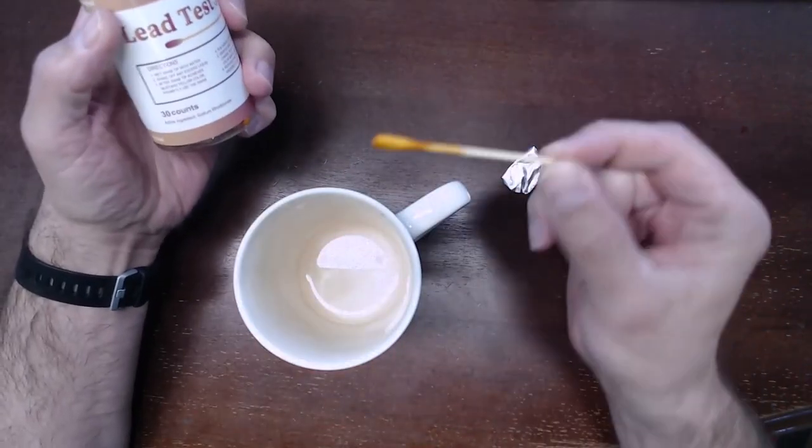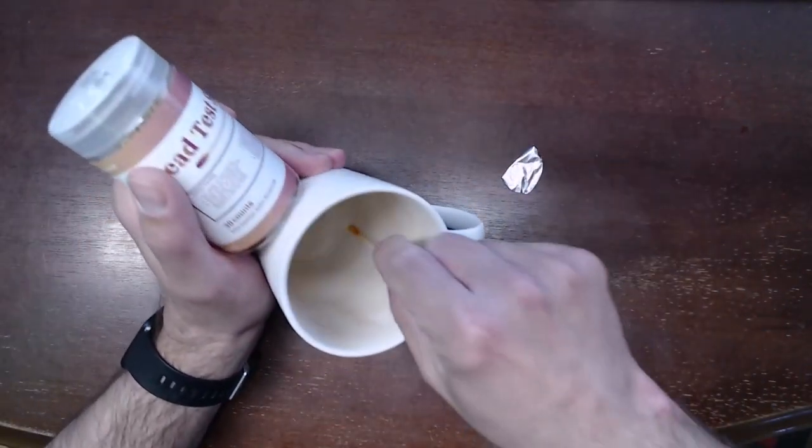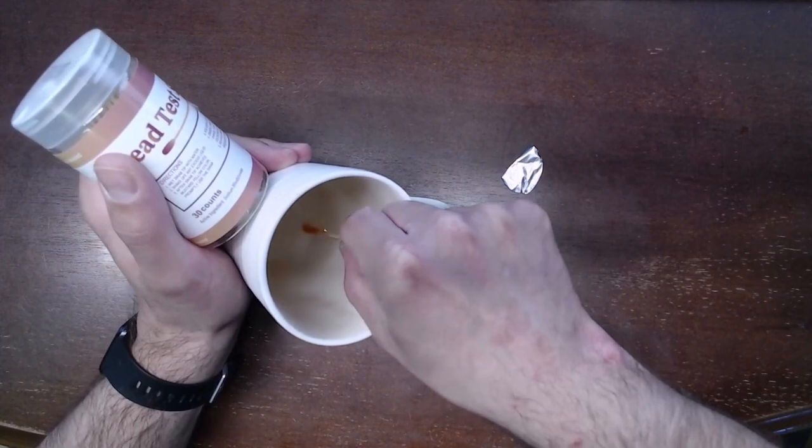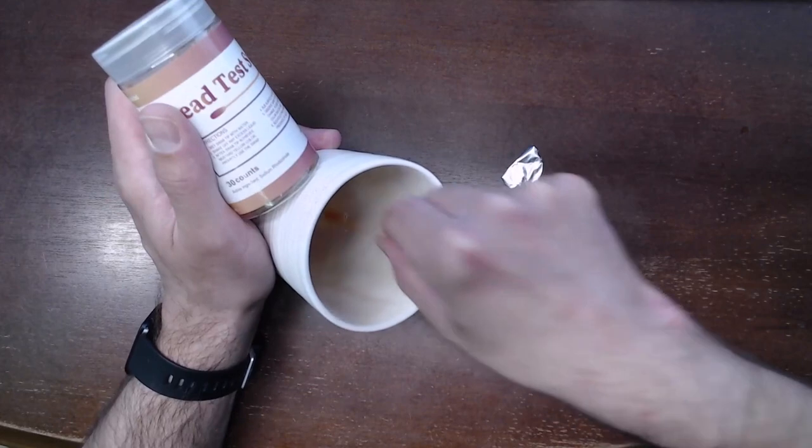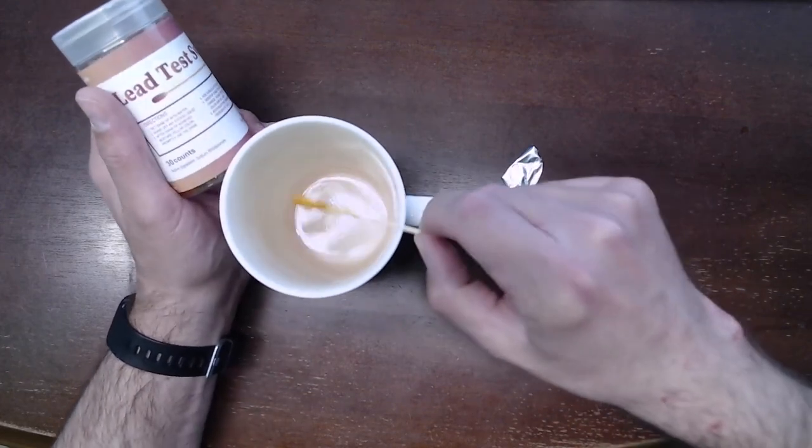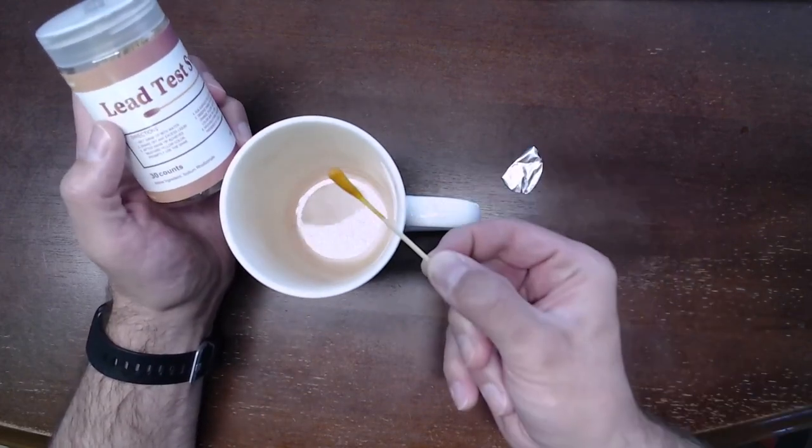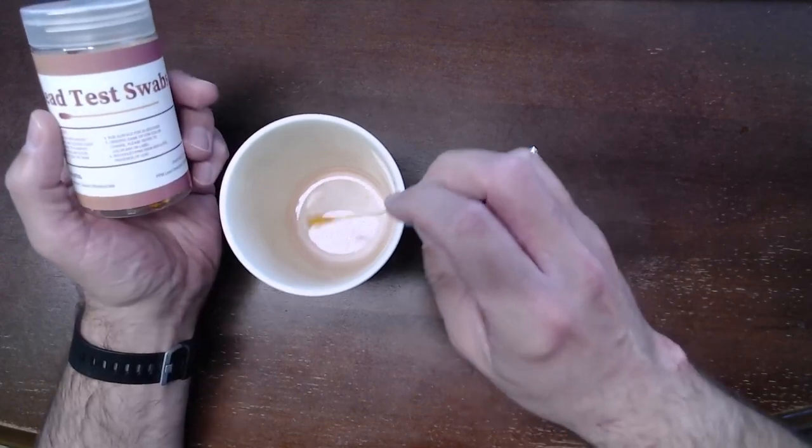The instructions are saying wet the tip with water. I actually have some water in this glass. This glass is what we're going to test. I expect a negative result on this. Then we shake off any excess liquids. You should see kind of a mustard yellow color. It says promptly use it.